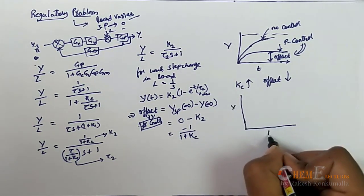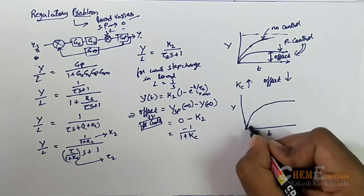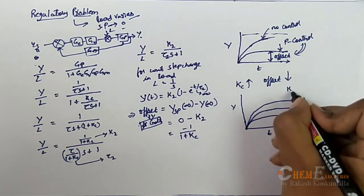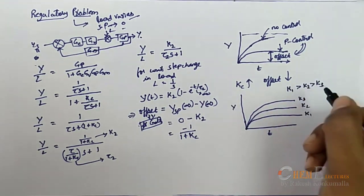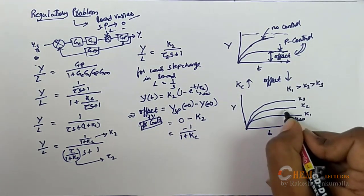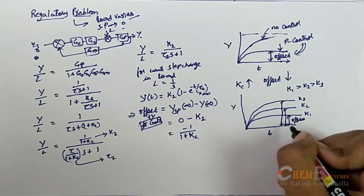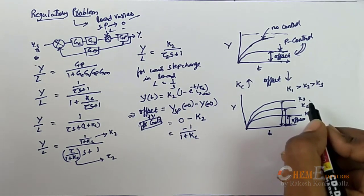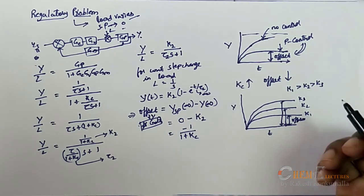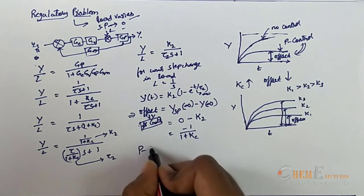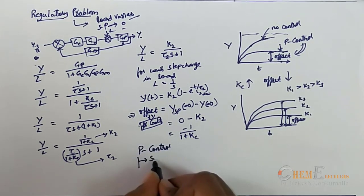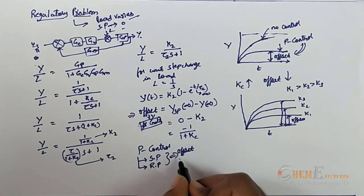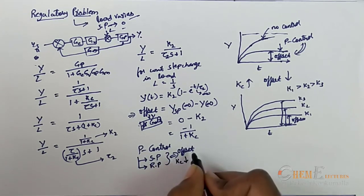Graphically, for different Kc values K1 > K2 > K3: when K1 is largest, the offset is smallest compared to K2 and K3. In this fashion you can adjust the proportional controller gain to reduce the offset. For P-control we have seen both servo and regulatory problems and obtained the key term offset. We concluded that as Kc decreases, offset increases.